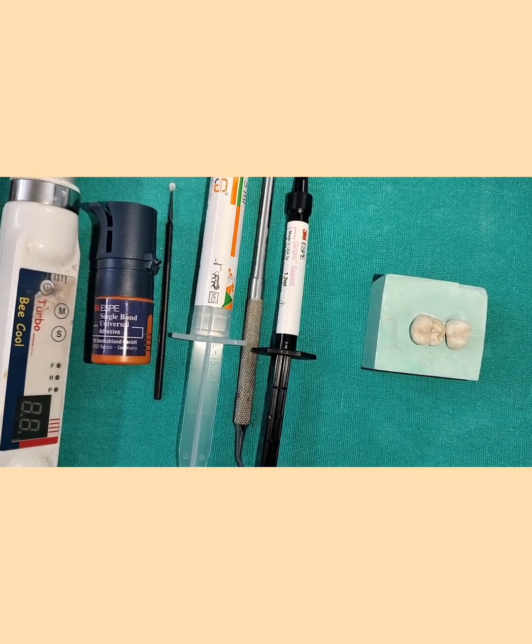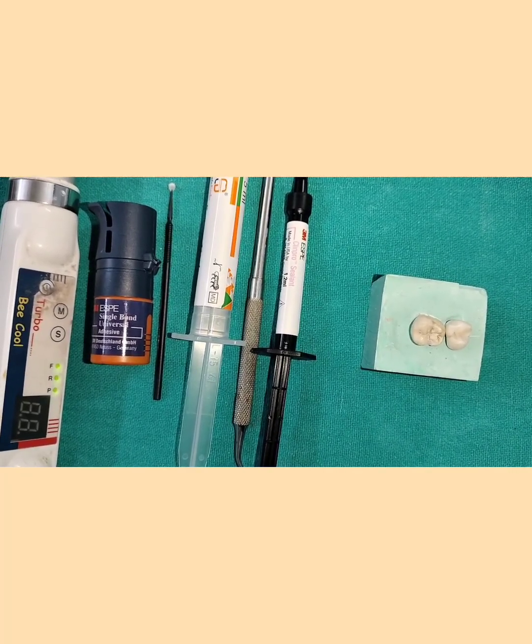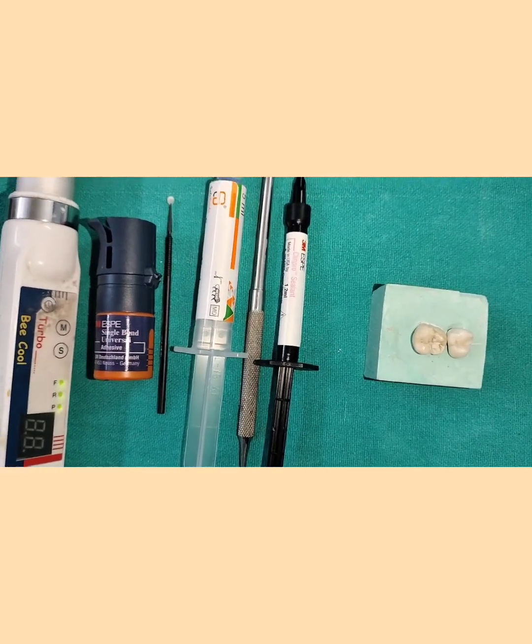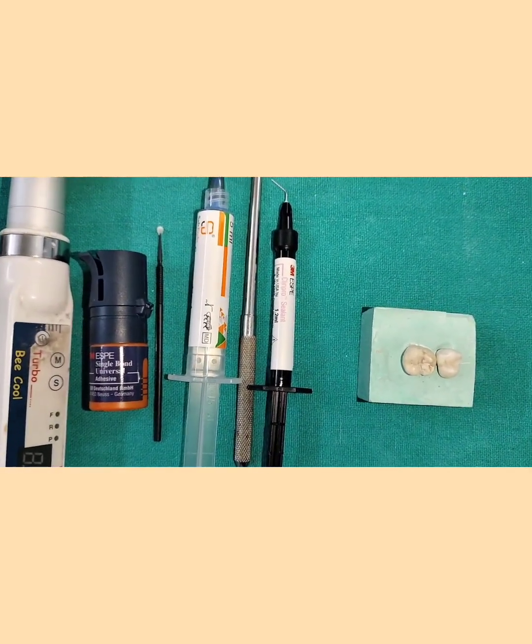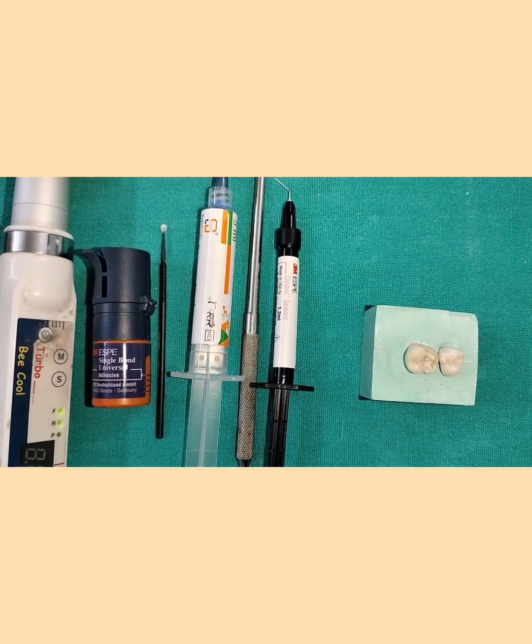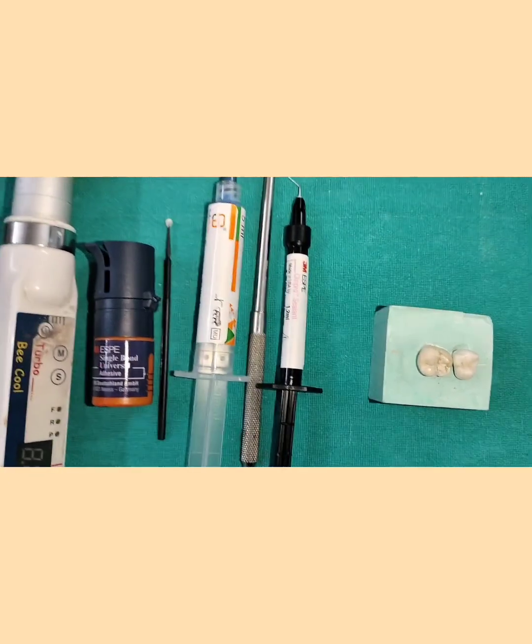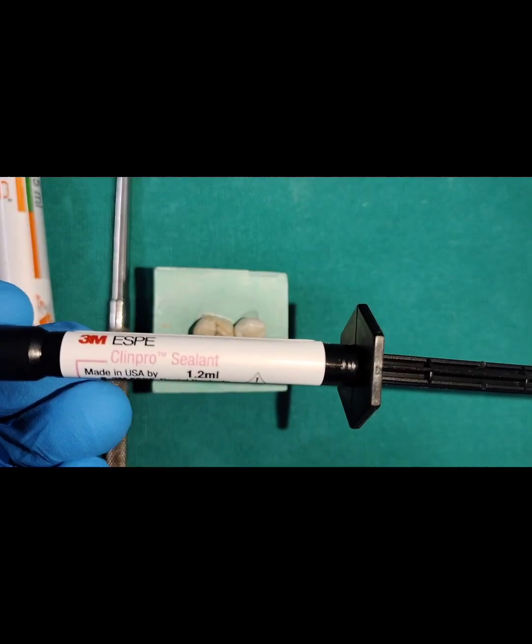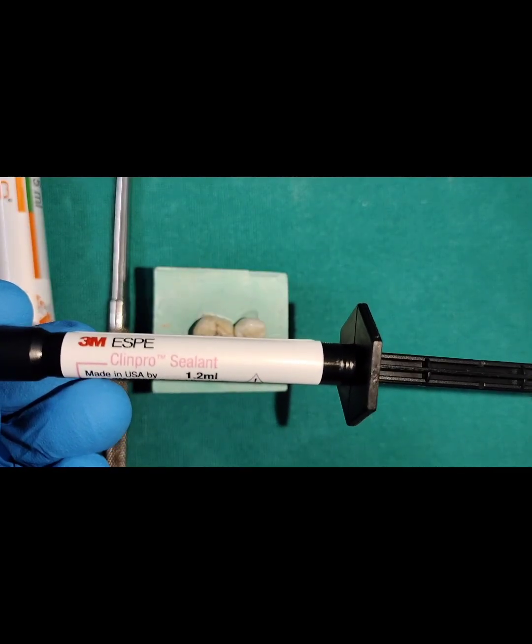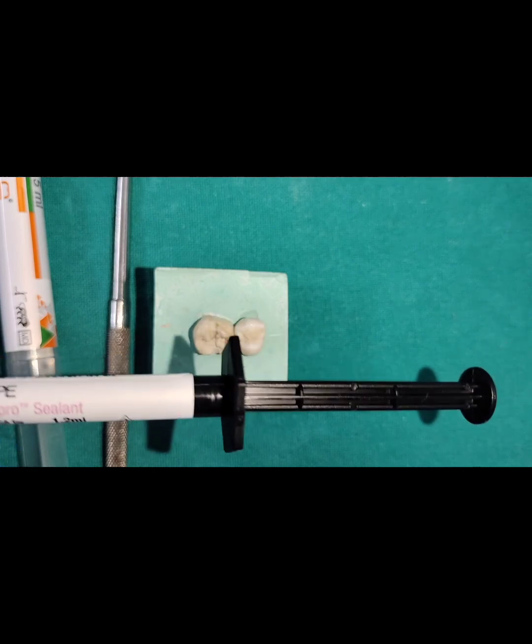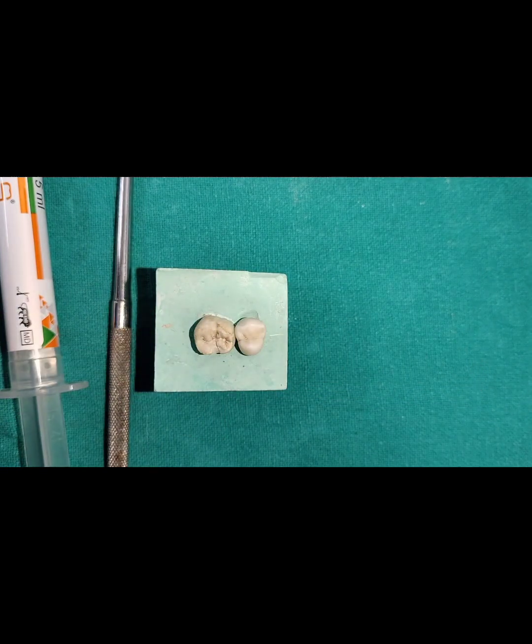Pit and fissure sealants can be of two types. They can be resin-based sealants or they can be glass ionomer based sealants. So basically we will limit our discussion to resin-based sealants. So this is one of the pit and fissure sealants which is resin-based and it is composed of bis-GMA resins which are light curable.